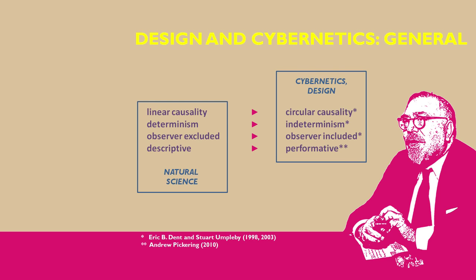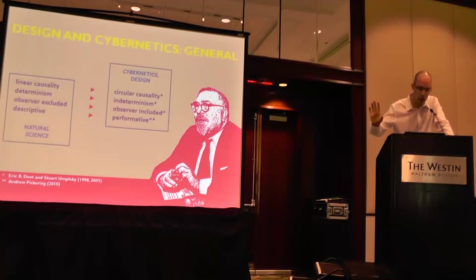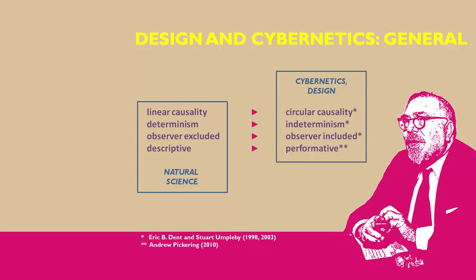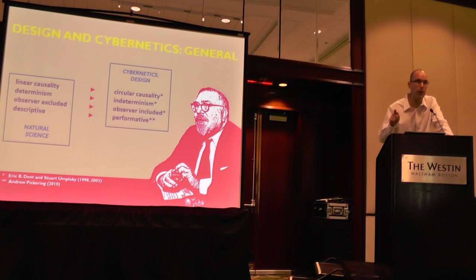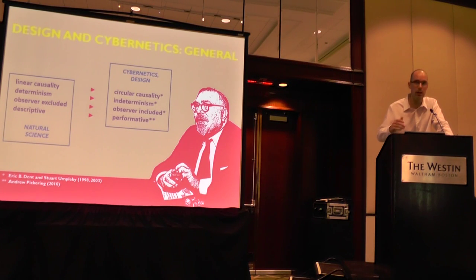When we look at what cybernetics and design have in common — sampling here from the work of mainly Stuart Umpleby and Andrew Pickering — a couple of keywords connect old ontology/epistemology to more cybernetic epistemology: going from linear causality to circular causality, from determinism to indeterminism, from the observer being excluded to the observer being included, and from descriptive to performative. These are the ones I'm particularly excited about. This draws a picture where design and cybernetics have a strong mutual compatibility, and either one of them has a certain incompatibility with conventional natural science.